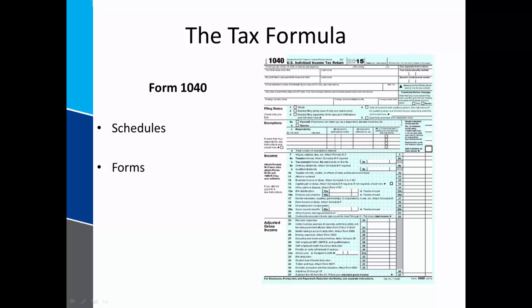Many lines of the additional schedules will require forms of their own and worksheets to be completed, and many lines of the forms will require their own worksheets. The supporting documents required to be filed with this one-page form may be 100 pages or greater. In 2015, there were approximately 375 schedules and forms that could accompany the Form 1040, and that does not include the worksheets required to complete the schedules and forms.